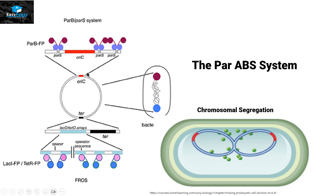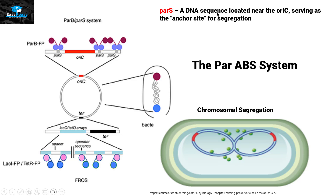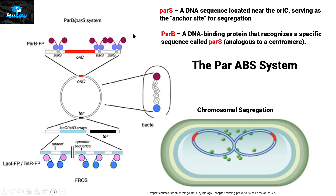This is the chromosome of a prokaryotic organism, and the ORIC is the origin of replication region. Looking more closely at this region, there are small parts beside the ORIC called the parS site. ParS is a DNA sequence located near the origin of replication and serves as the anchor site for chromosome segregation. The parB protein is present as a pair and binds to this anchor site, parS, to start the process of chromosomal segregation.